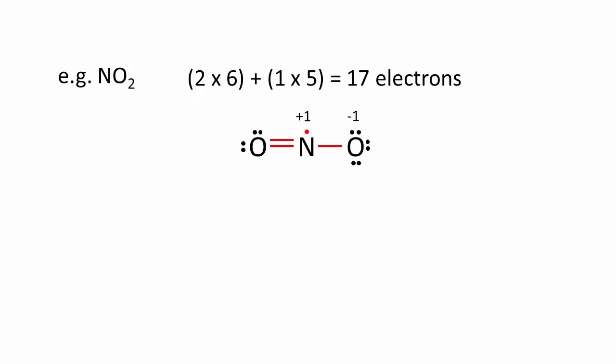However, eight electrons is an absolute maximum for atoms in the second period such as carbon, nitrogen, and oxygen. So if eight is not possible, seven is the only option. Nine is not an option.